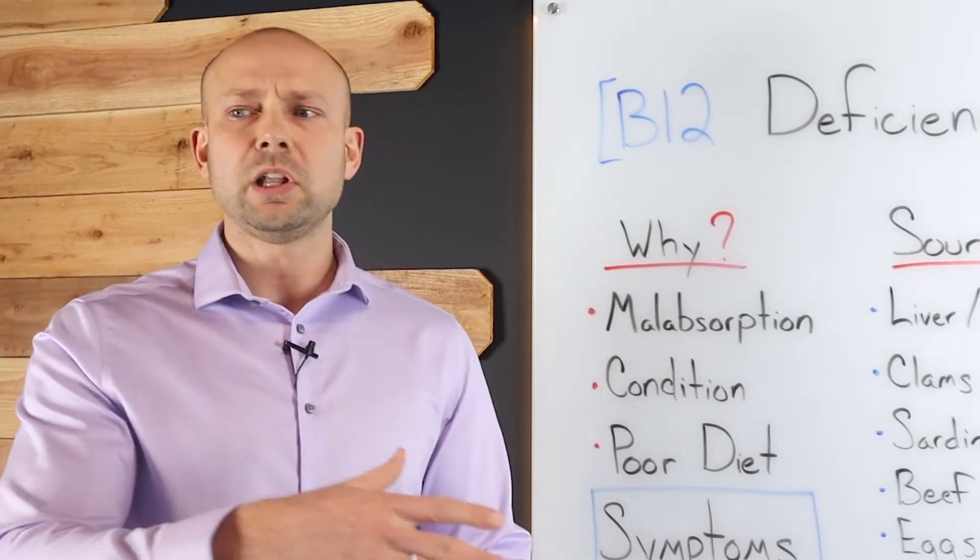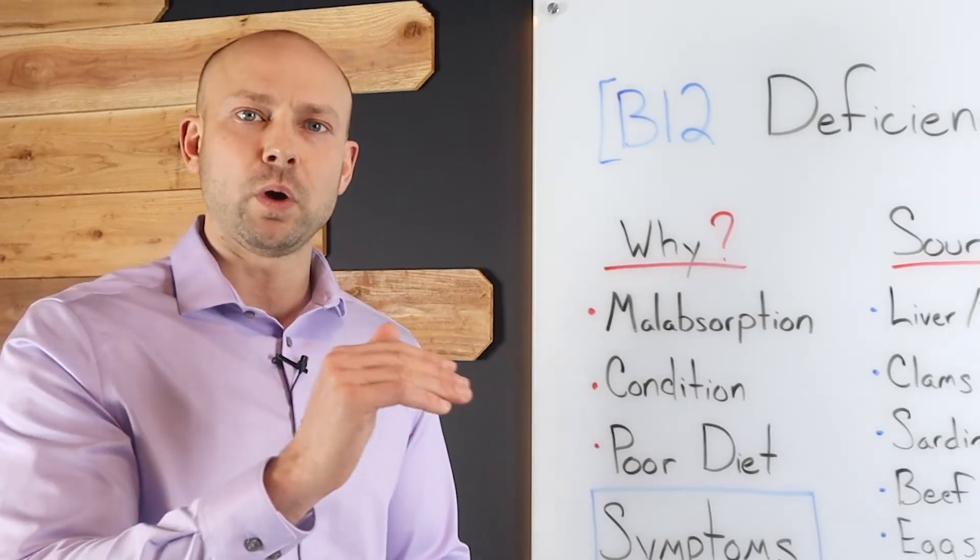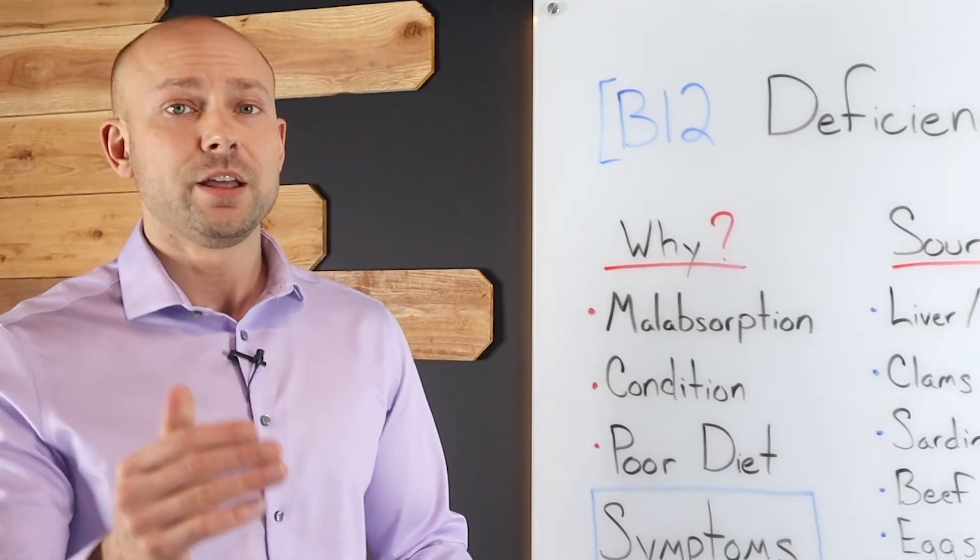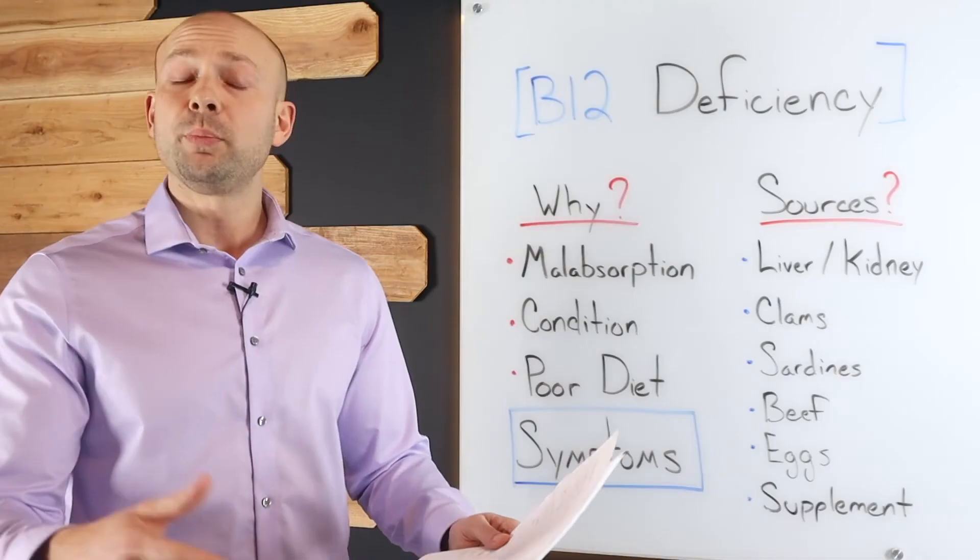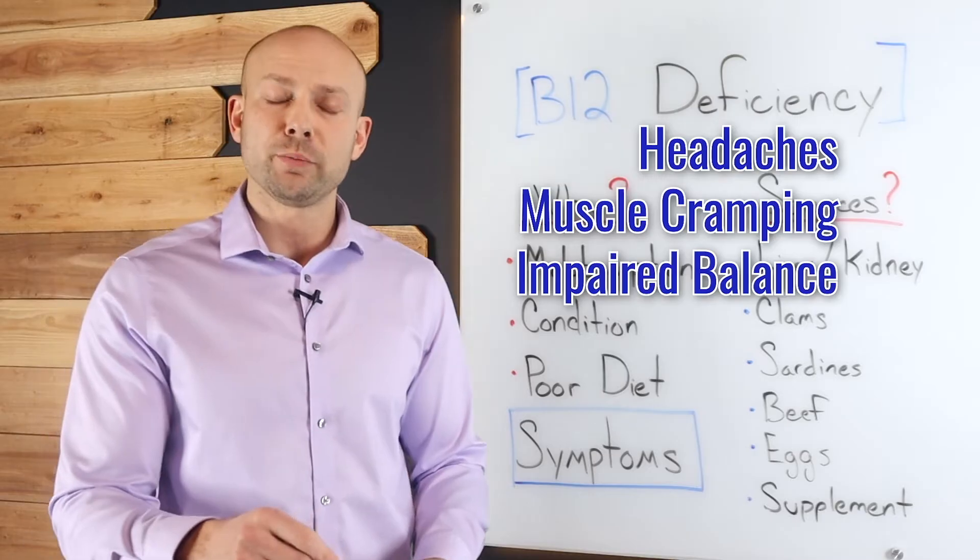This is something that's important to realize: a lot of these different symptoms could obviously fall into a lot of categories of different conditions. But the reality is if you just keep hitting every one of these, then there's a good chance that you have a B12 deficiency. B12 deficiency can cause headaches, muscle cramping, and also even impaired balance.